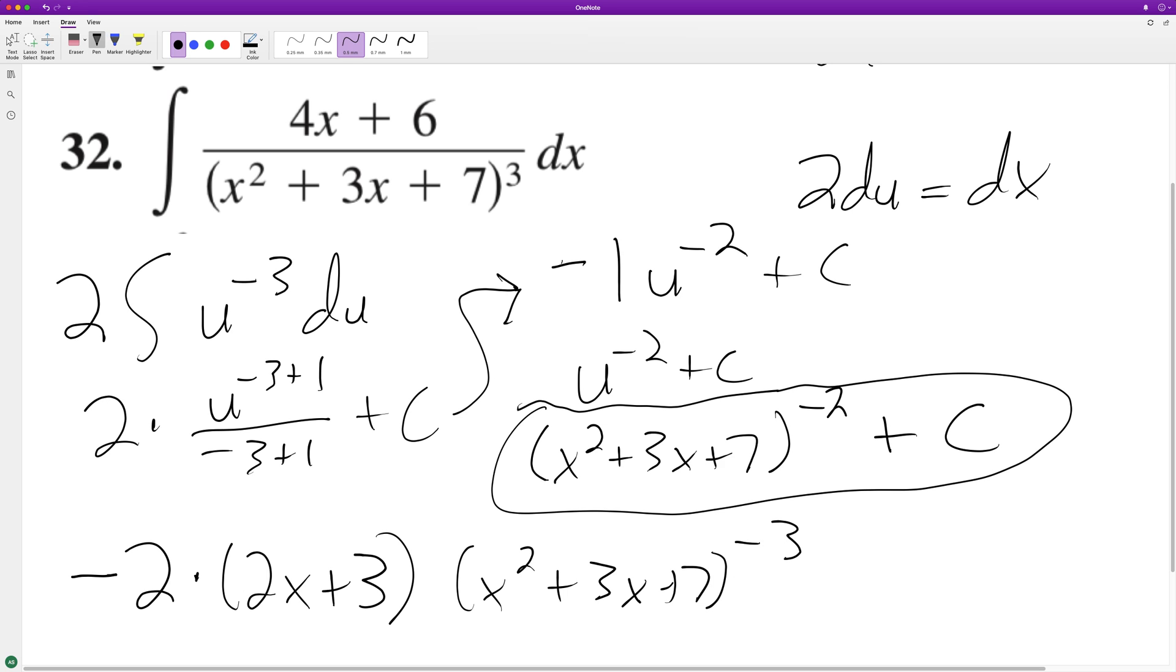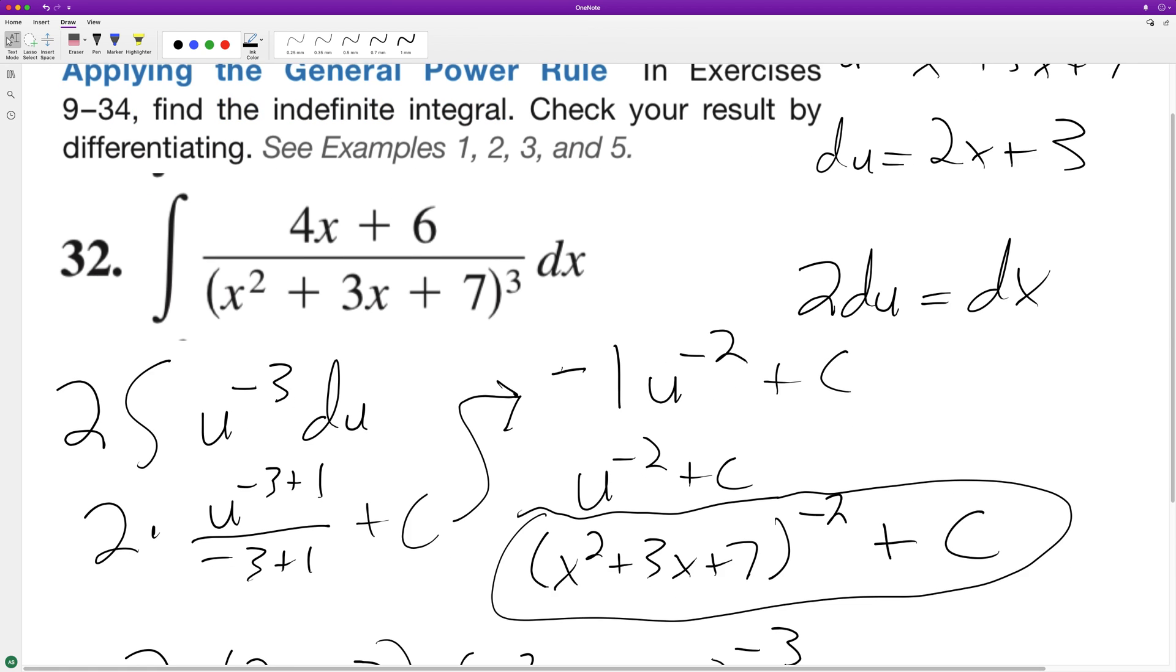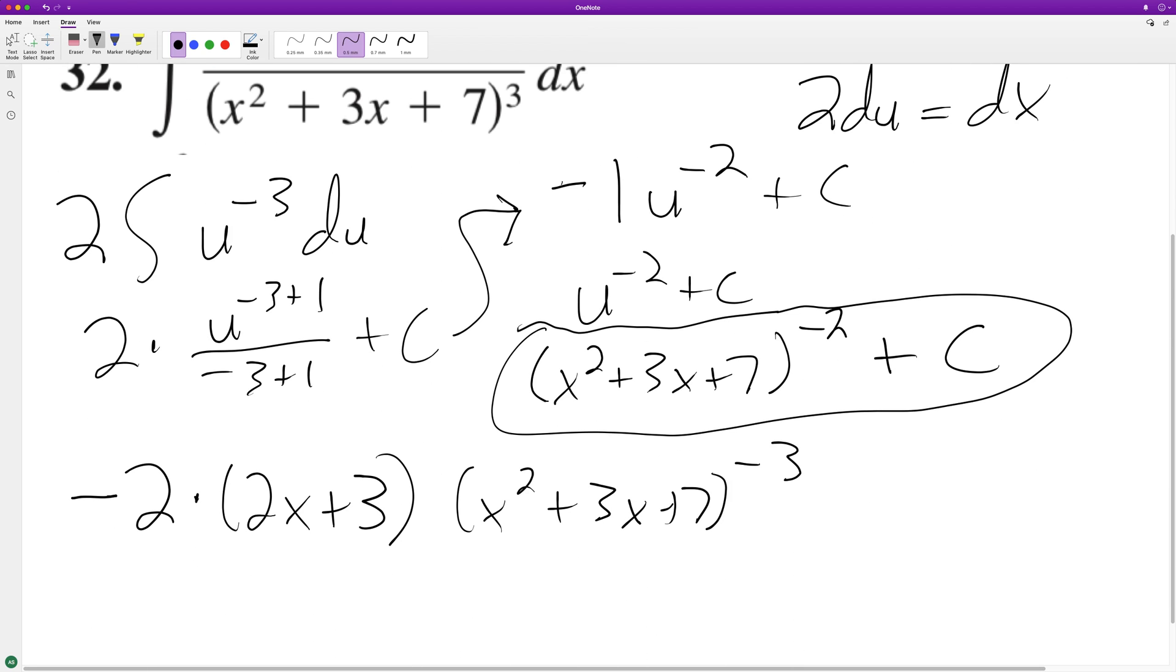So if we multiply... What's going on here? This should be, I should still have a negative out in front. I messed up. So I should have a negative.